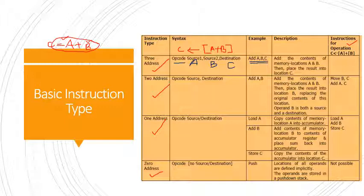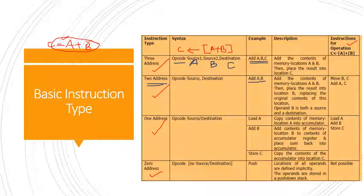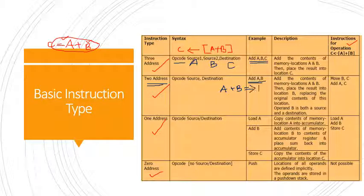We can also accomplish the same operation using a two-address instruction. In a two-address instruction, we have an opcode followed by a source and destination. The example for two-address instruction is: ADD A, B — which adds the content of memory location A and B, then places the result into location B. So operand B is both a source as well as a destination here.